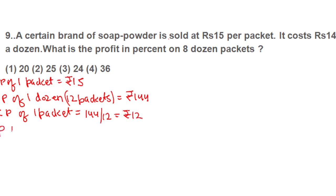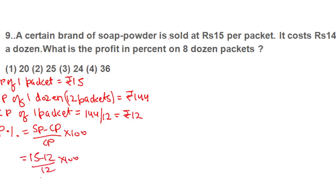The profit percent formula is: profit percent equals SP minus CP upon CP into 100. SP is 15, CP is 12. So 15 minus 12 upon 12 into 100 equals 3 upon 12 into 100, which comes out to be 25 percent.